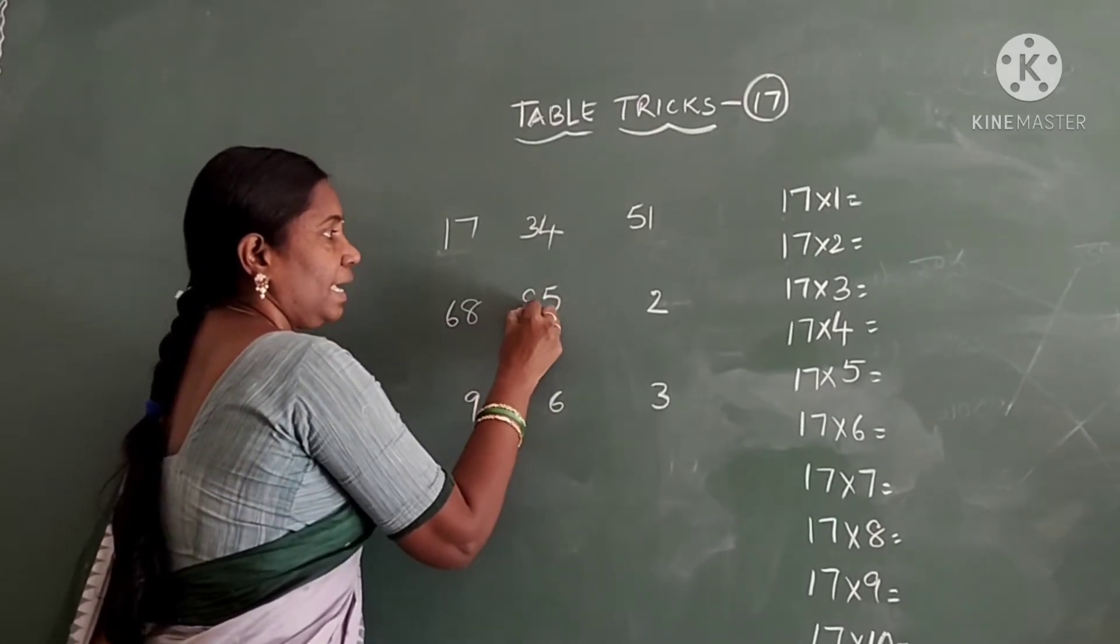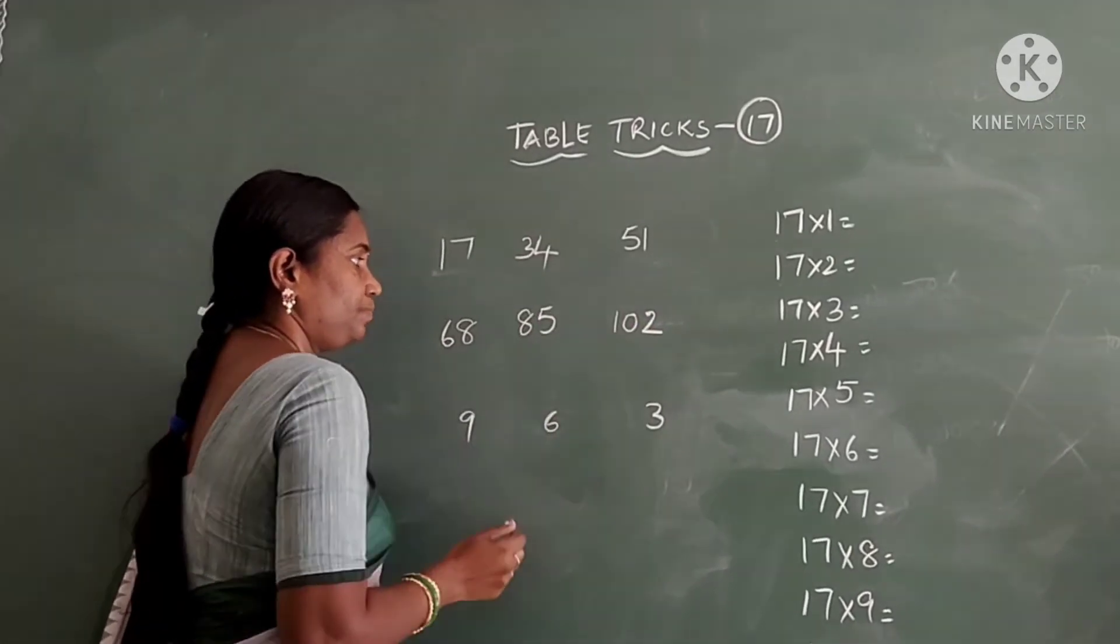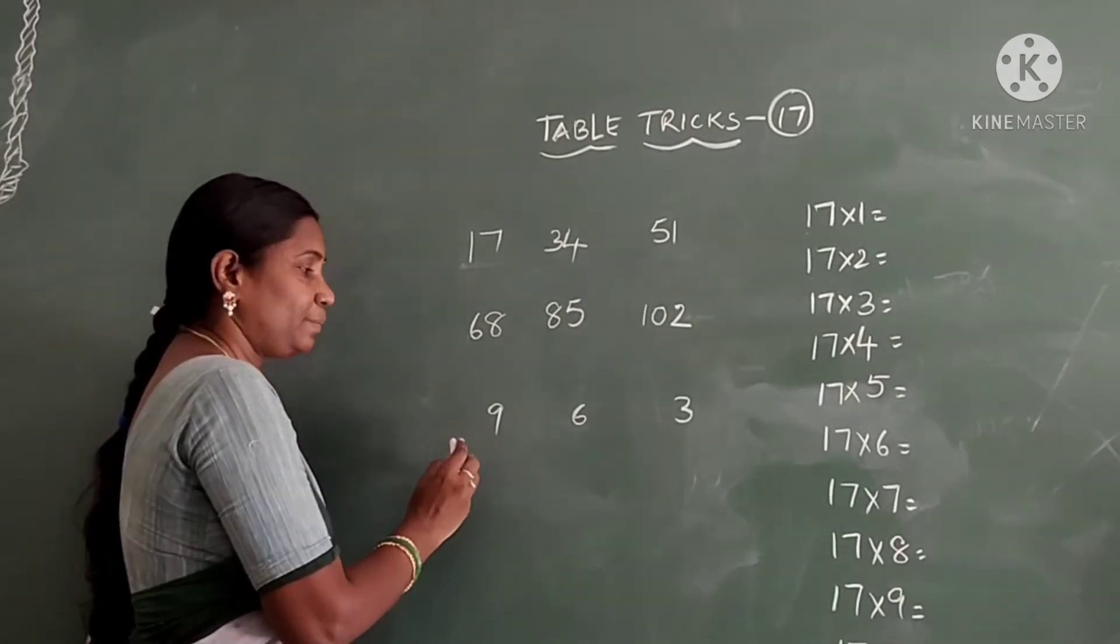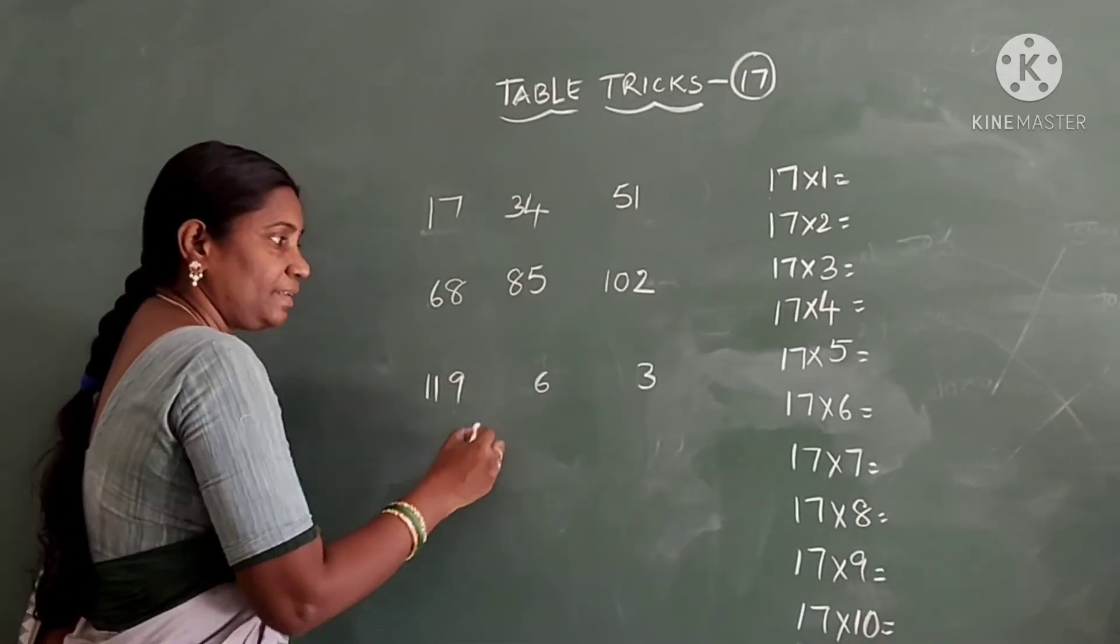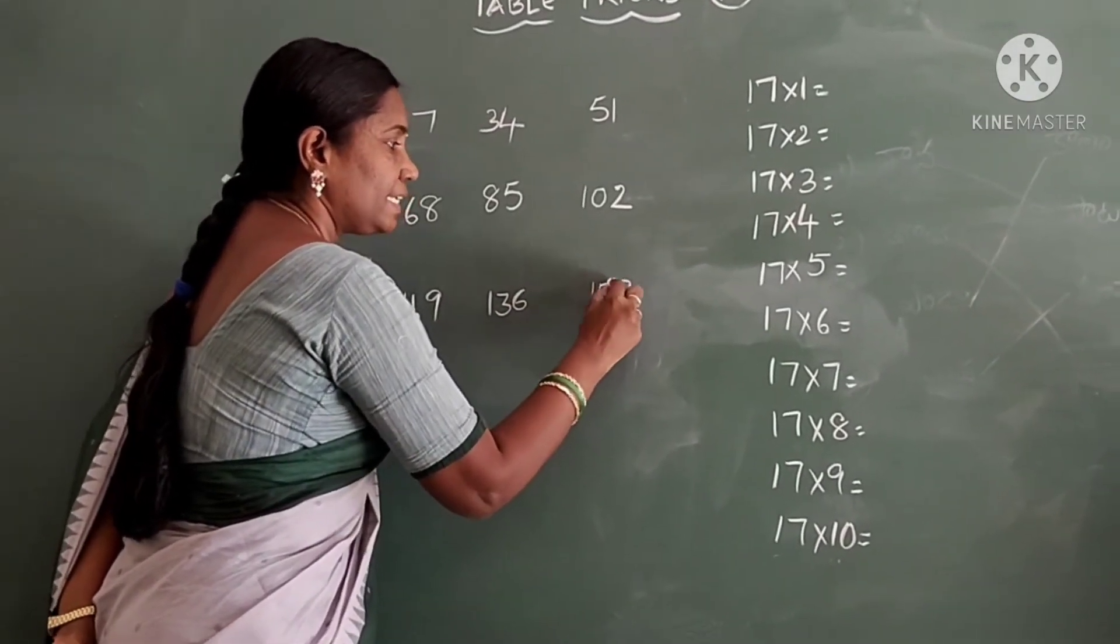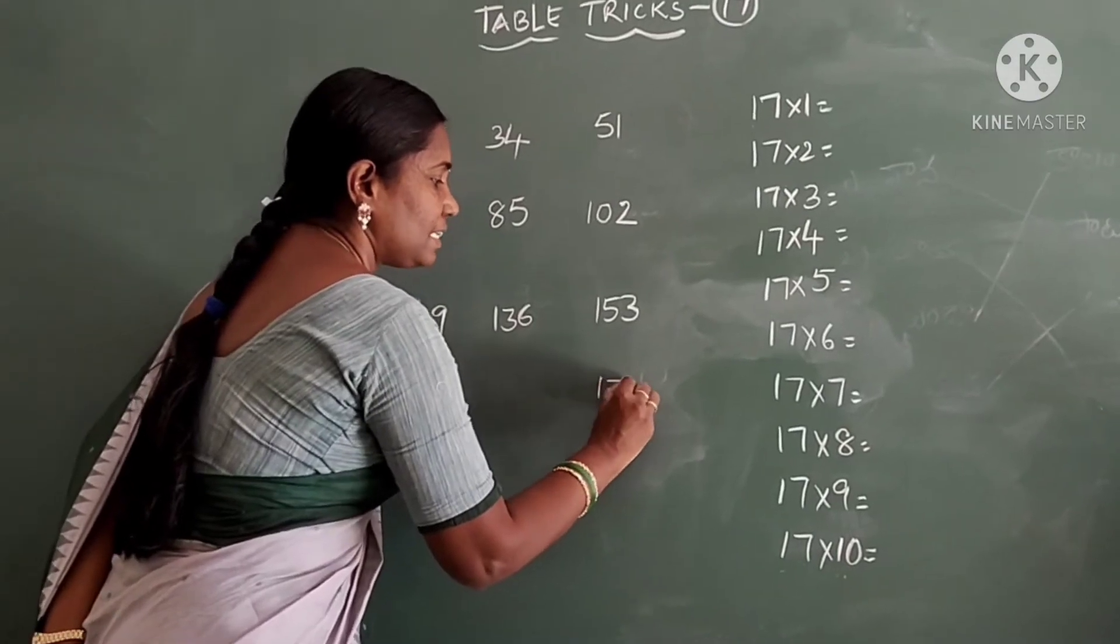6, 8, 10. Here again we have to start odd numbers. 11, 13, 15 and 170.